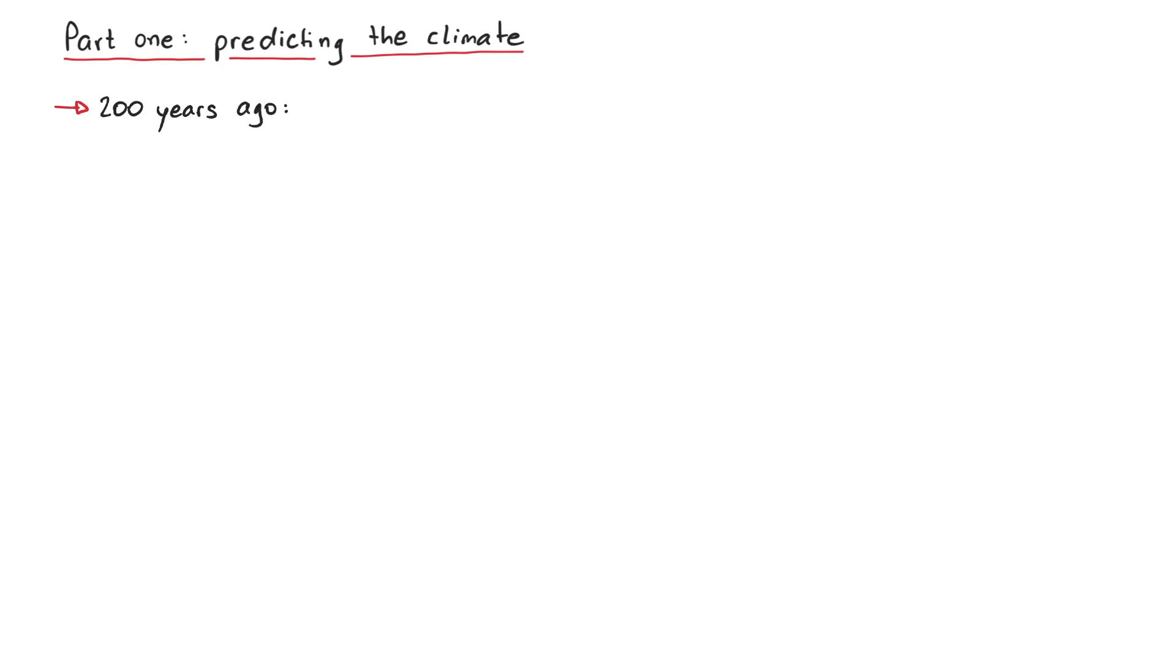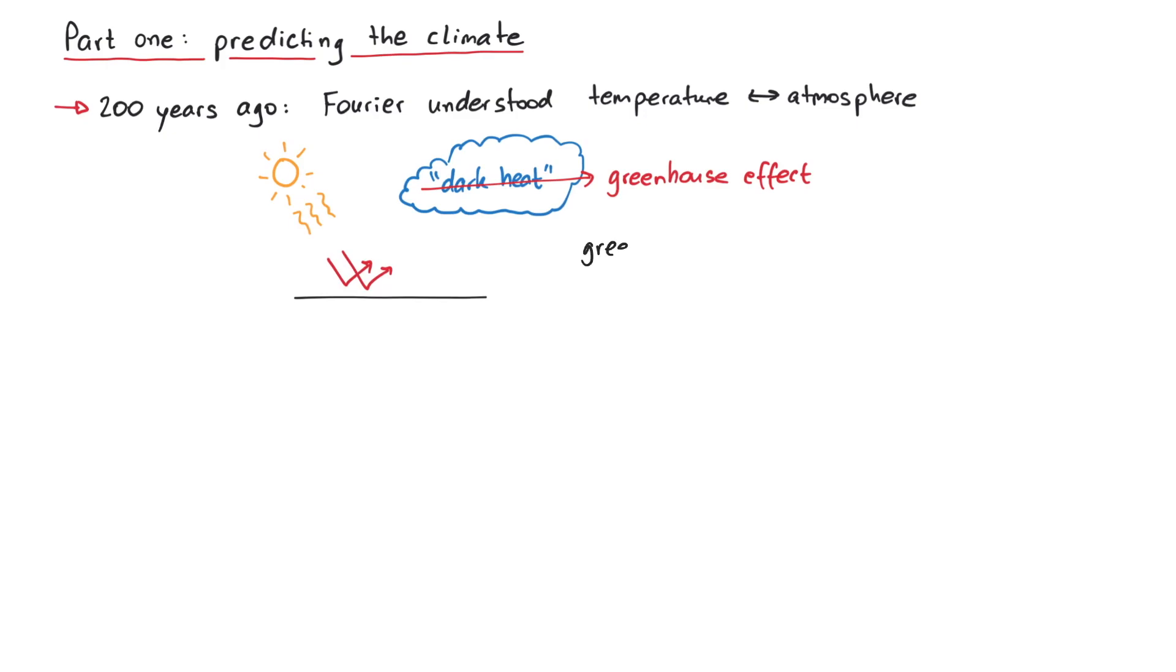Around 200 years ago, the French physicist Joseph Fourier already understood that the temperature around him must be influenced by the atmosphere. He thought that the energy from the sun's radiation is reflected from the ground and stored in the air as dark heat, a process which we now call greenhouse effect. We now know that the heating of our atmosphere is due to so-called greenhouse gases, for instance, carbon dioxide, methane or water vapor.